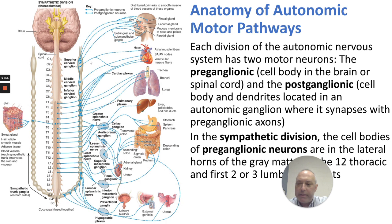The effector organs depend on the postganglionic neuron, but can vary from the lacrimal gland or heart muscle, breathing, vasoconstriction, vasodilation, the liver, the gastrointestinal system, the kidneys, and the urinary system.